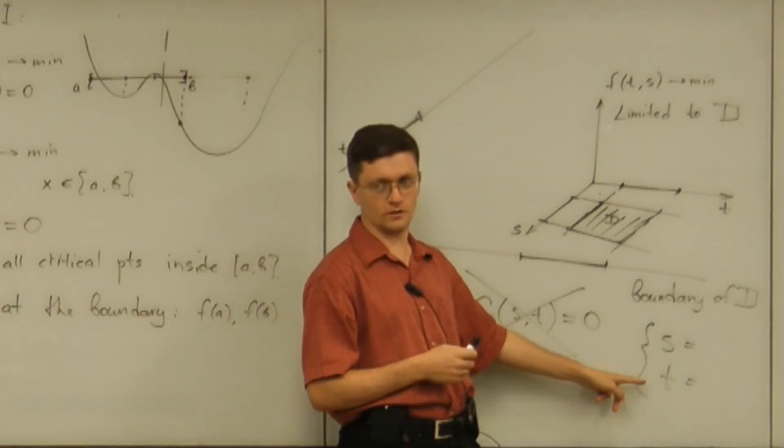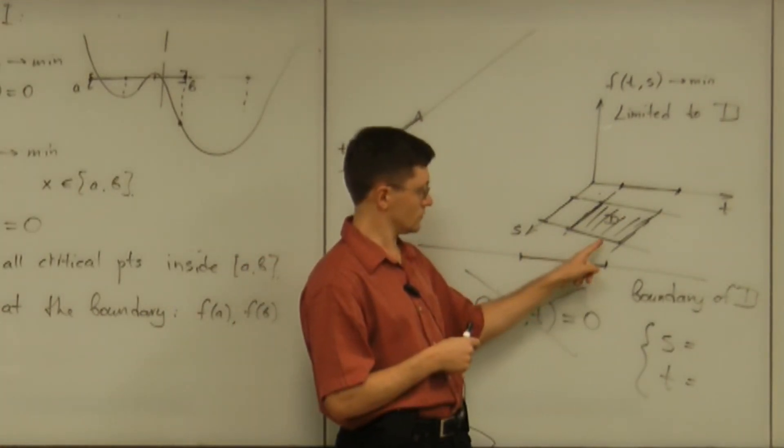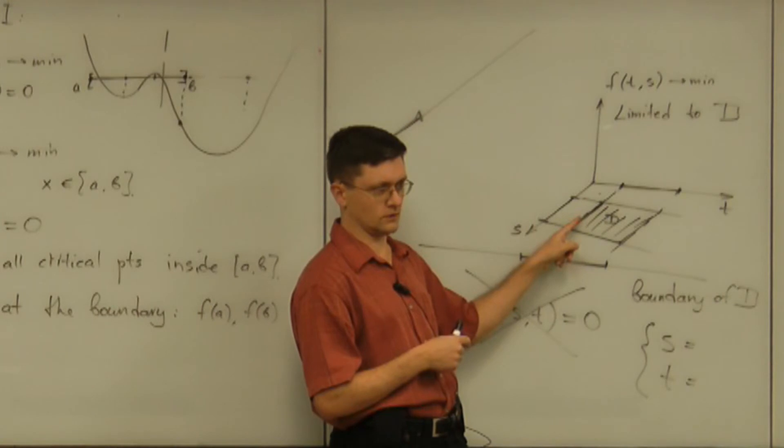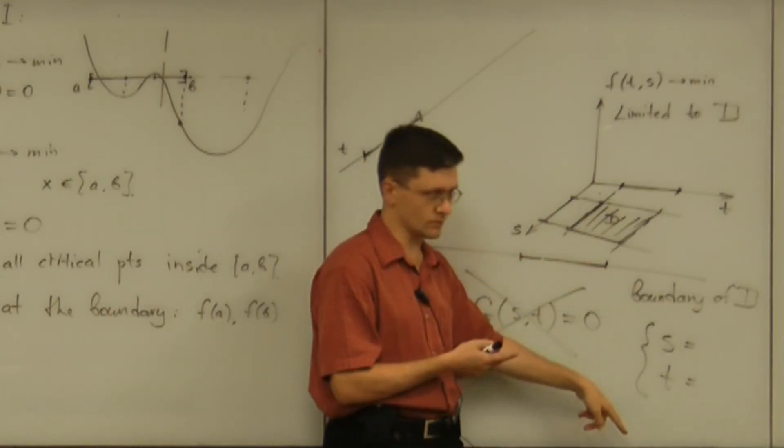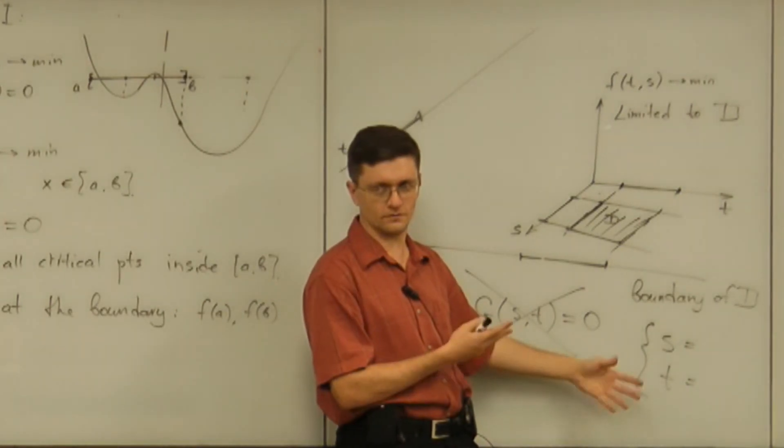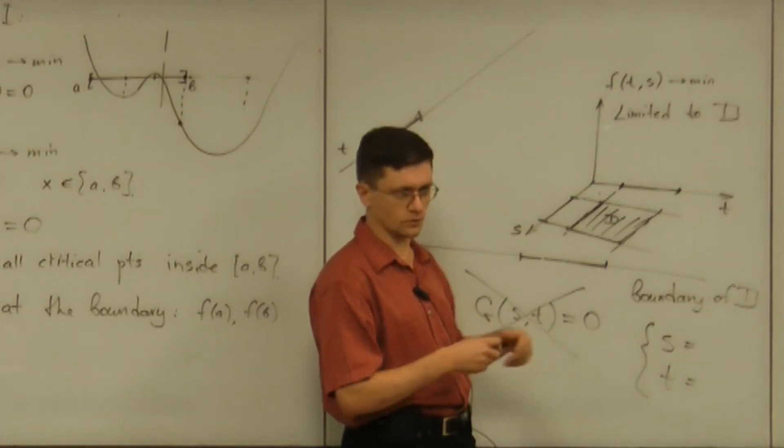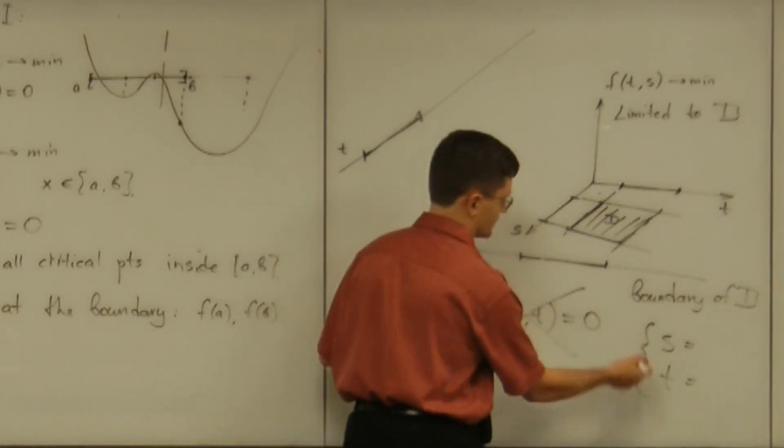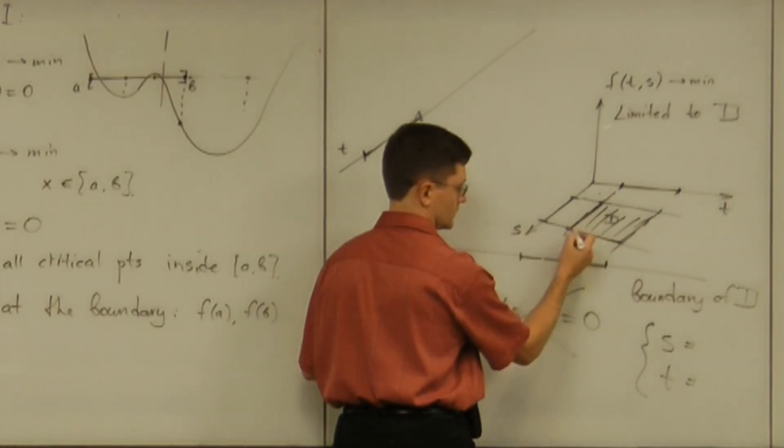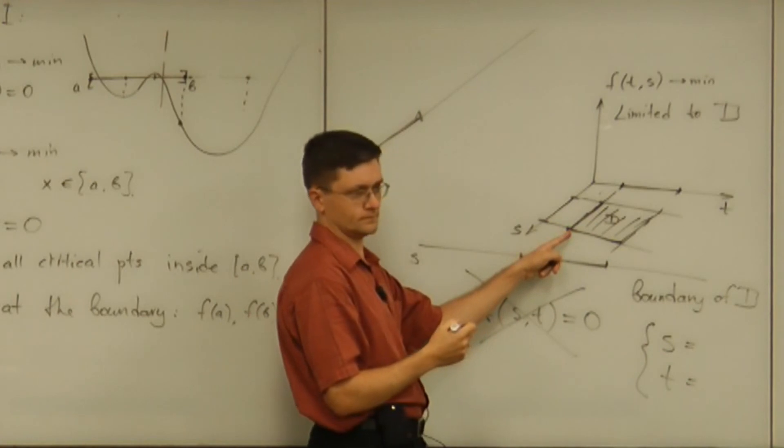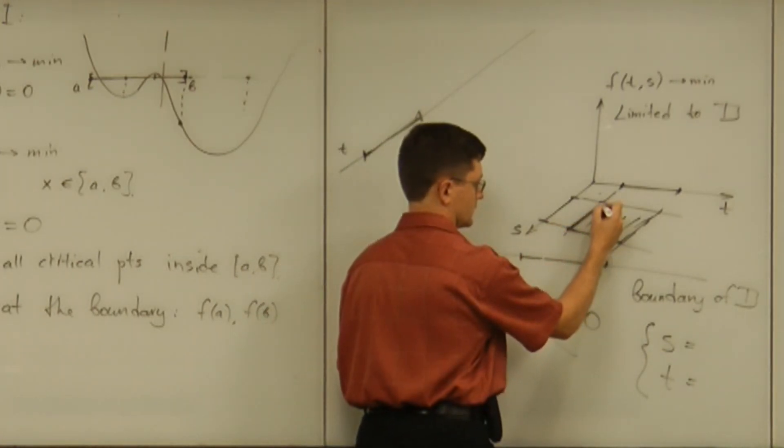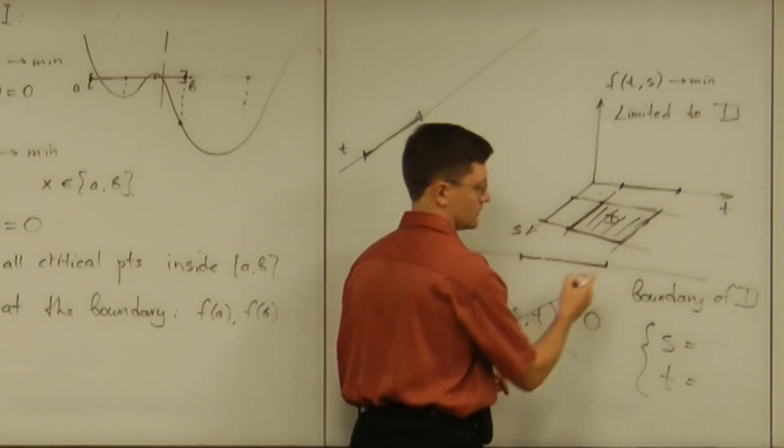But whatever it is, it should make this corner and making the corner makes it non-differentiable. And again, the procedure will fail from calculus point of view. So, what you can only do is you can parameterize a part of the boundary. One side. And then you can parameterize the other side and the other side and the other side.